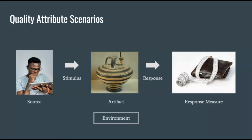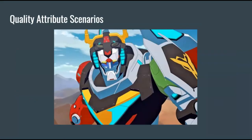This sounds kind of hard to process, so I will provide some examples of Quality Attribute Scenarios to help understand all of this better. To this end, I've chosen Voltron as a system — yes, Voltron, Defender of the Universe, a mighty robot, loved by good, feared by evil, and so on.